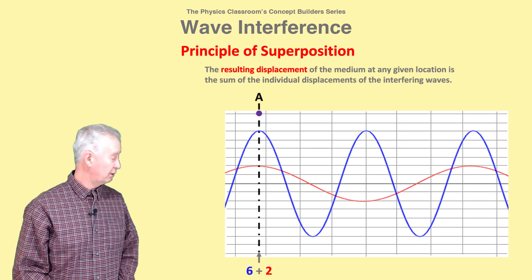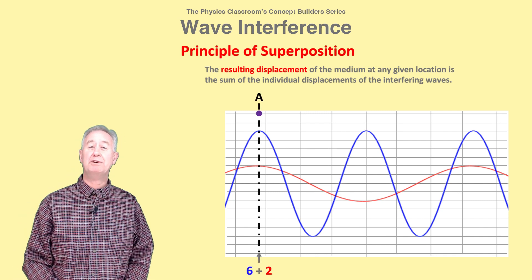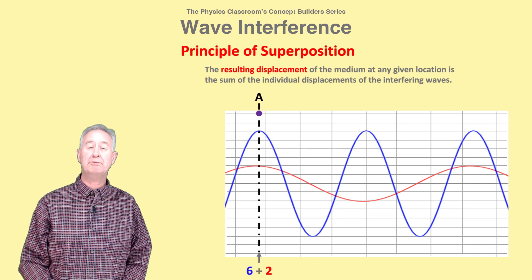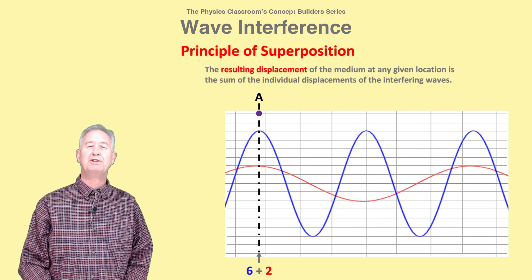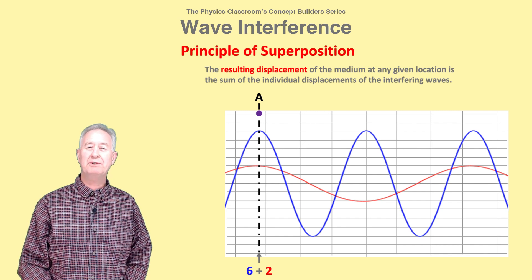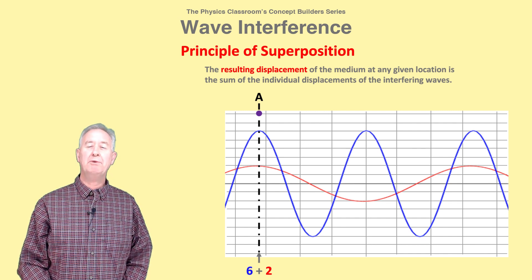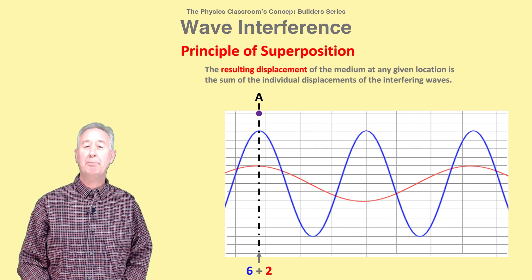For example, at location A in the diagram, the resulting displacement is positive eight units, since the blue wave is displaced upwards with positive six units and the red wave displaced downwards at negative two units.